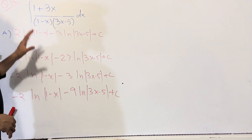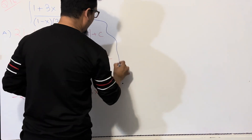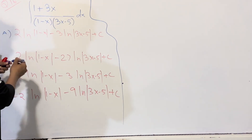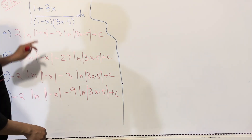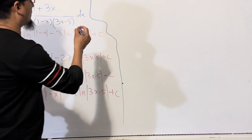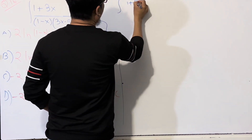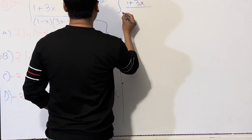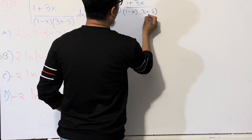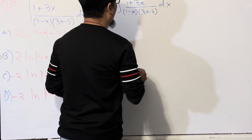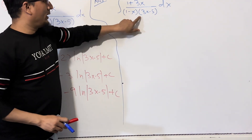Such types of questions always come in the AP exam, so I'm going to tell you how to solve such types of integrations. There are options A, B, C, and D. I'm going to solve this question first. The question is: the integral of (1 + 3x) / (1 - x)(3x - 5) dx.